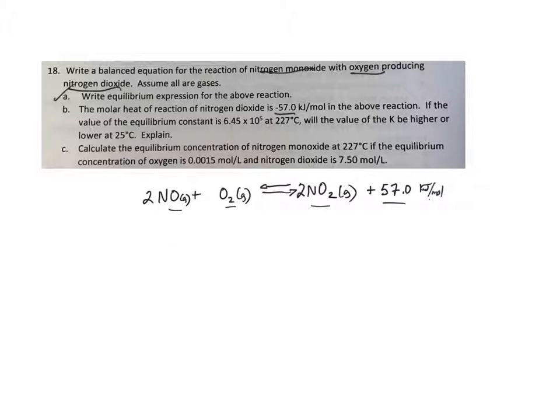So they say if the value of the equilibrium constant is 6.45 times 10 to the 5th at 227 Celsius. They say, will the value of K be higher or lower at 25 degrees Celsius?